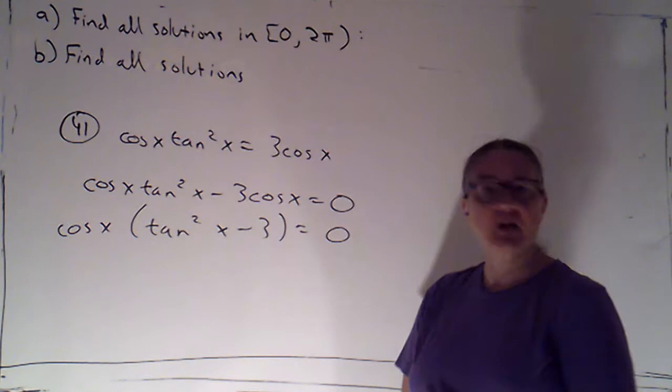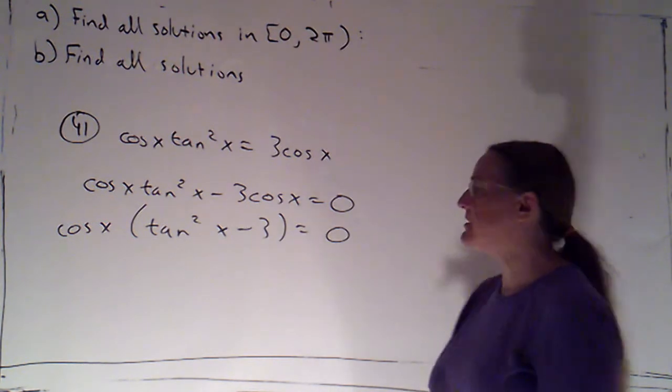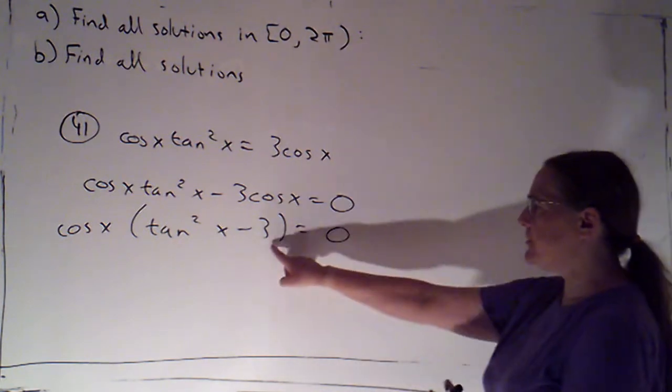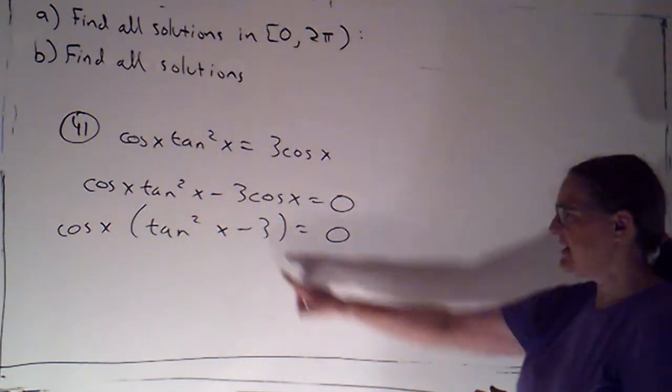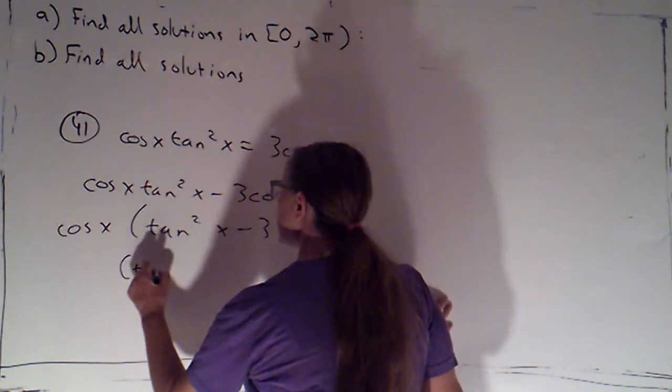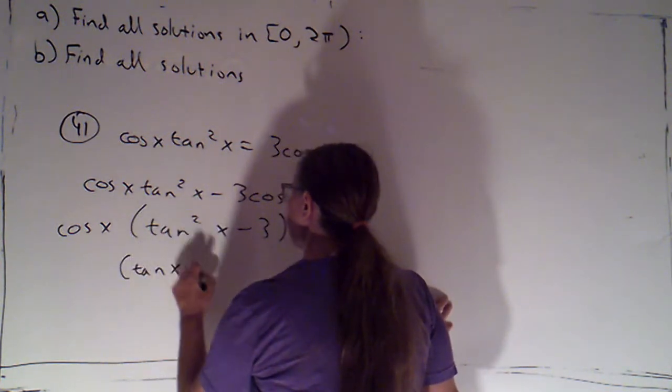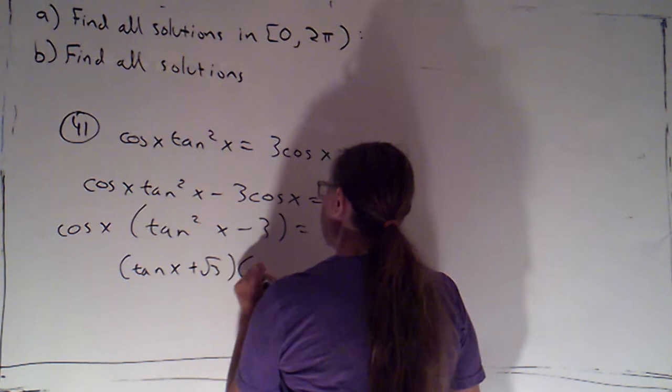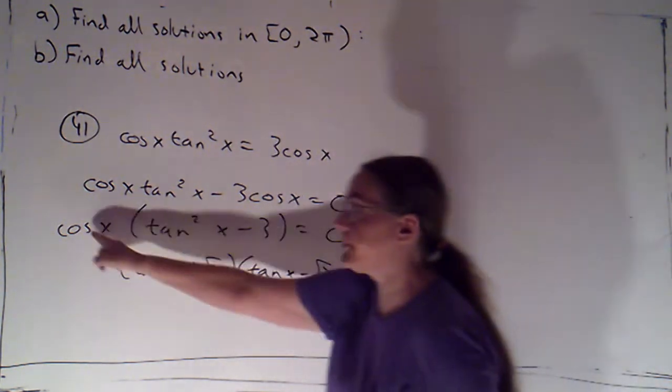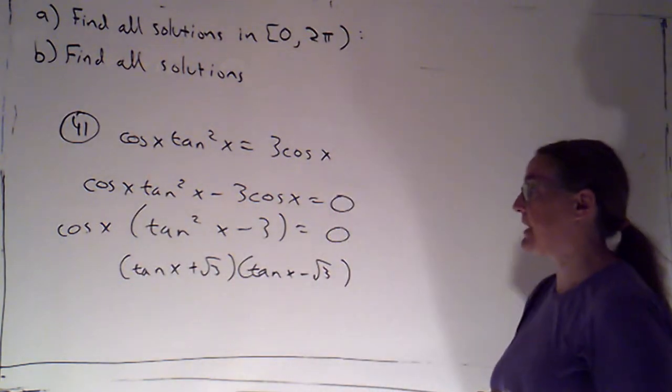Now with this other factor, that's a quadratic in tangents. If I wanted to, I could factor that. I could view this as a difference of two squares, because 3 is root 3 squared. So I could, if I wanted to, factor this as tan x plus root 3 times tan x minus root 3. And then I would have a total of three factors throwing in that cosine.